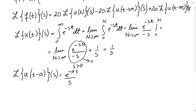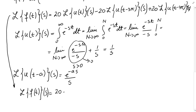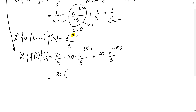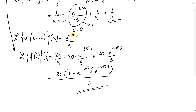Going back to our computation, the Laplace transform of f of t equals 20 over s minus 20 times e to the negative 3 pi s over s, plus 20 times e to the negative 4 pi s over s, since a equals 3 pi then 4 pi. The final answer can be written as 20 times 1 minus e to the negative 3 pi s plus e to the negative 4 pi s, all over s. I hope this helps.